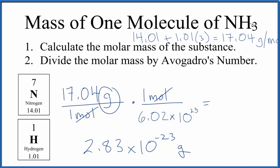So one molecule of ammonia, NH3, is 2.83 times 10 to the negative 23rd grams. We know it should be a small number, really small since it's a molecule. That negative 23rd there kind of points that out to us.